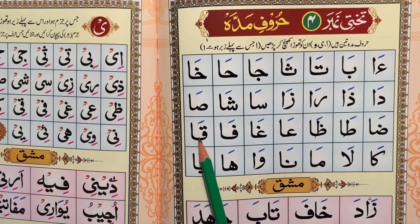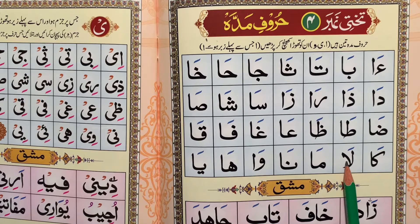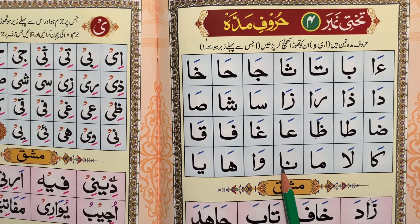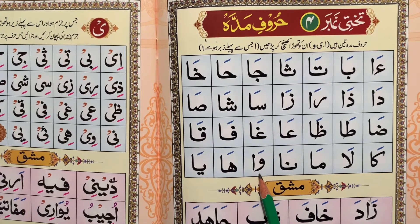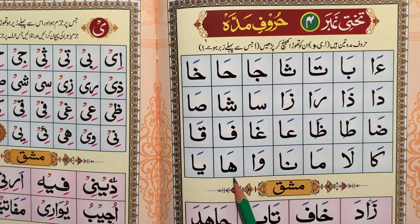Qaf Alif Zabar - QA. Kaf Alif Zabar - KA. Lam Alif Zabar - LA. Mim Alif Zabar - MA. Nun Alif Zabar - NA. Waw Alif Zabar - WA. Ha Alif Zabar - HA.